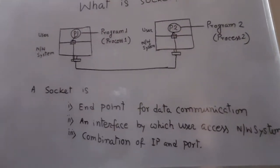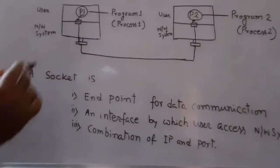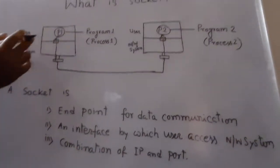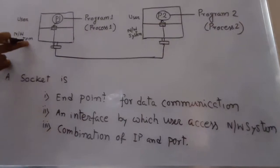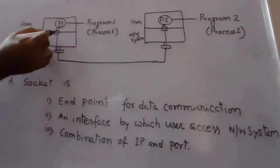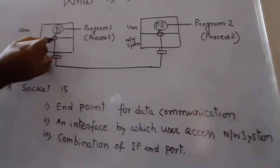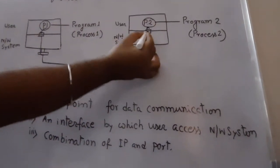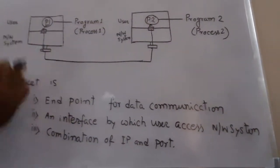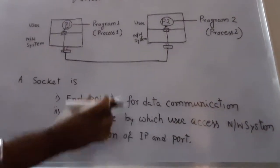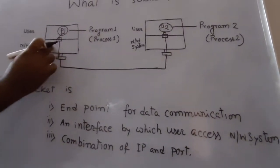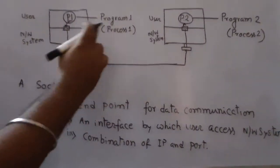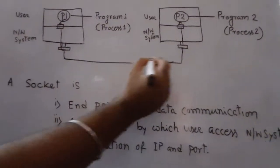In another way, we can define socket as an interface. Here you can see the computer system can be divided into two parts: the user and the network system. The user is accessing the network system through the socket. Similarly, on the other side, the user is accessing the network system through the socket. So the socket is an interface between the user and the network system.